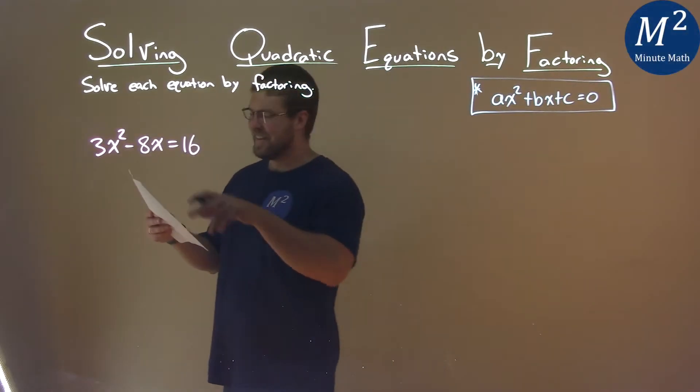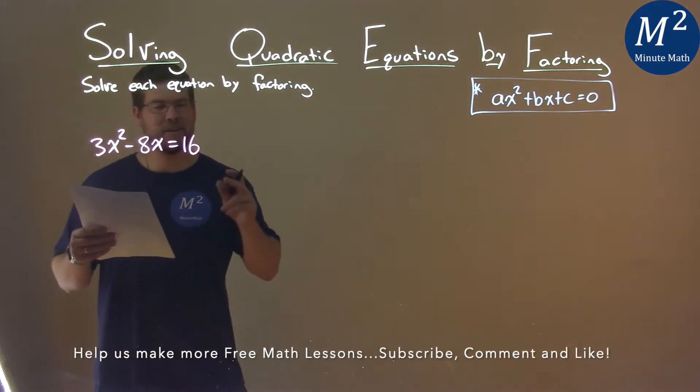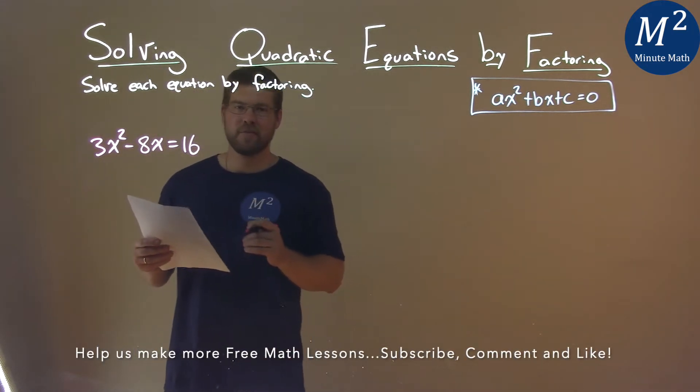We're given this problem right here. 3x squared minus 8x equals 16, and we need to solve this by factoring.